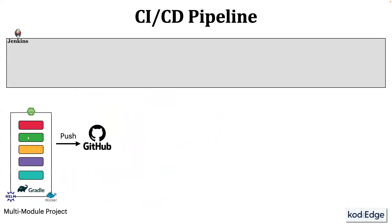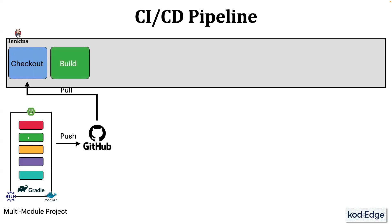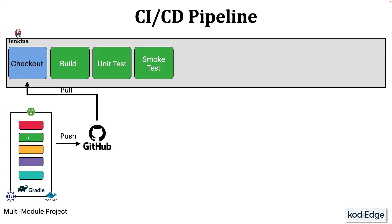Then we will set up a Jenkins pipeline. The first stage in the pipeline will be checkout, which will pull the code from GitHub. Next stage will be the build stage, where we will compile the code and create a jar file for the application. After that, the unit test stage will run unit tests on the application. Next stage will be the smoke test, which will run functional tests or what you may also refer to as end-to-end tests.